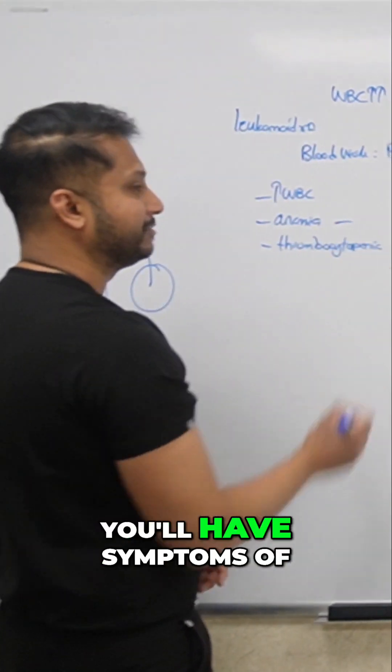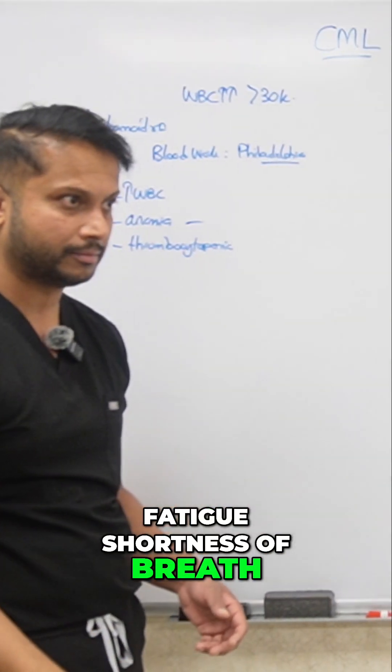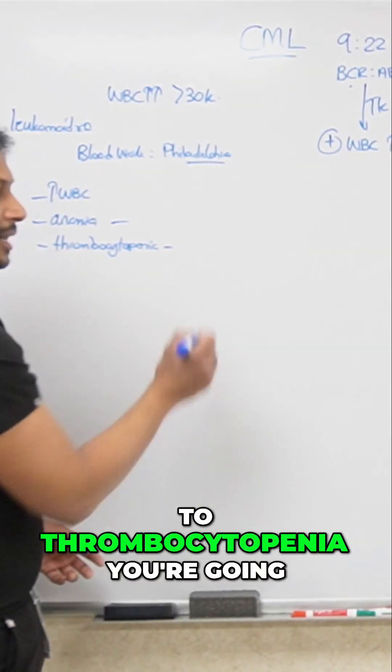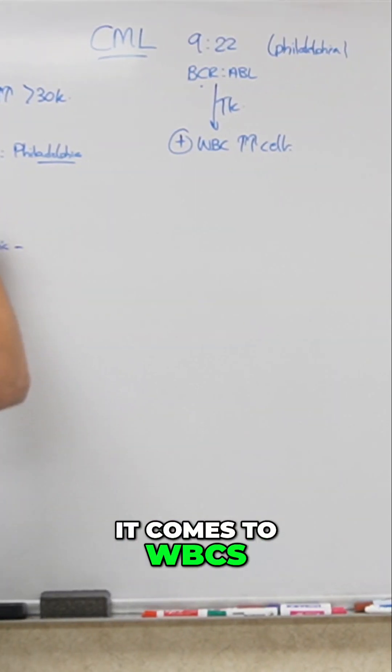Now when it comes to symptoms, you'll have symptoms of anemia such as dizziness, fatigue, shortness of breath. When it comes to thrombocytopenia, you're going to have all your bleeding problems.